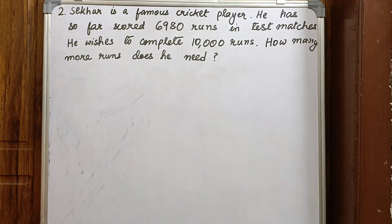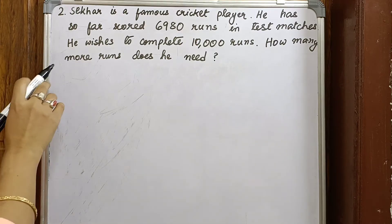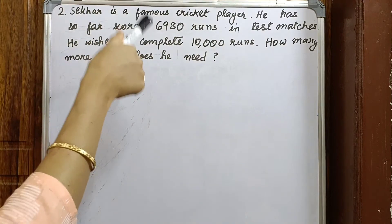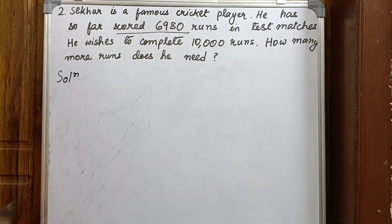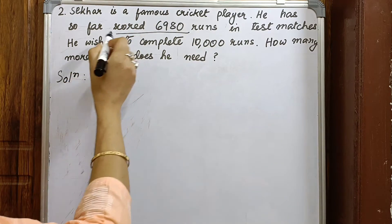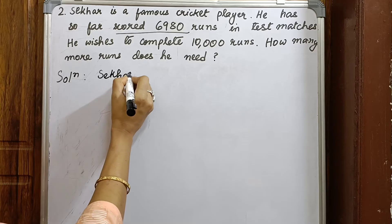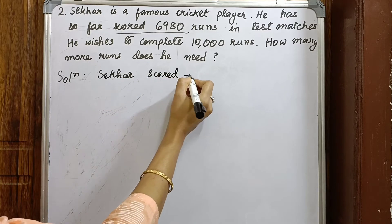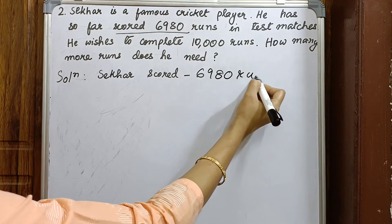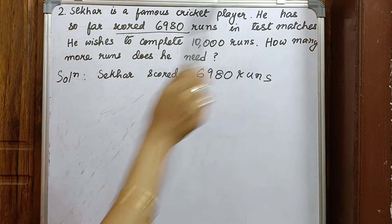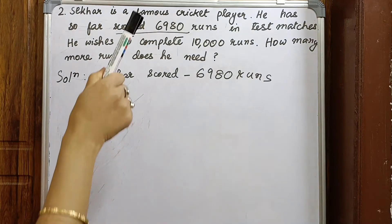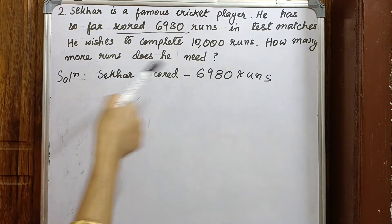Question two: Sekhar is a famous cricket player. He has scored 6980 runs in test matches and wishes to complete 10,000 runs. How many more runs does he need? Sekhar has scored 6980 runs but he wishes to complete 10,000 runs, so how many more runs does he need?